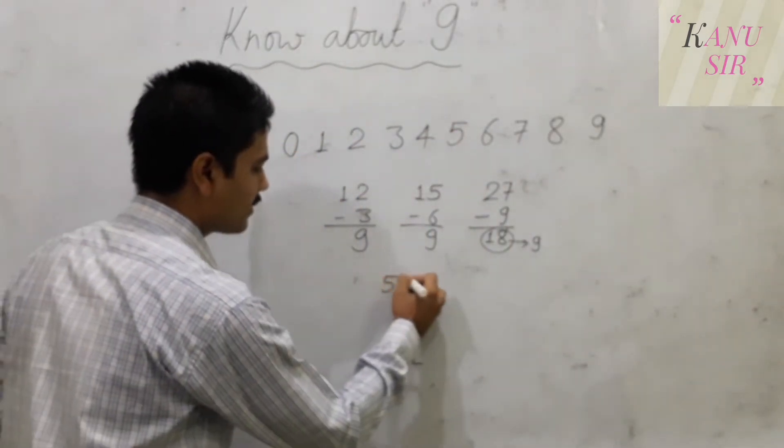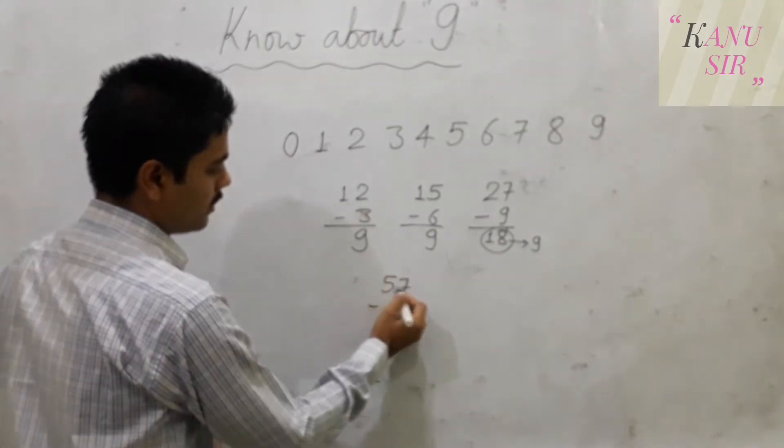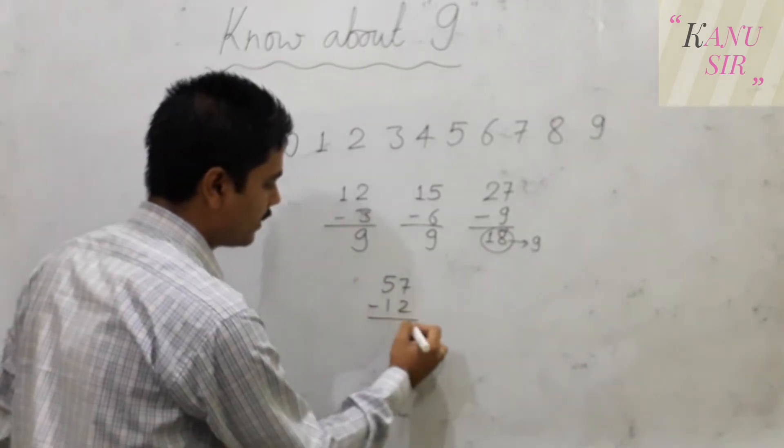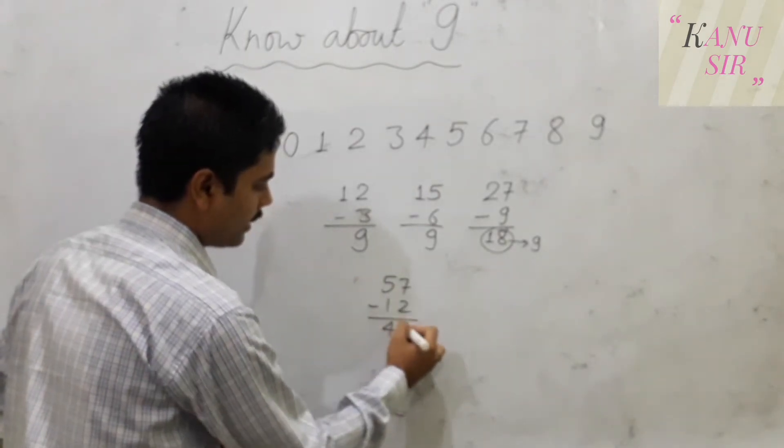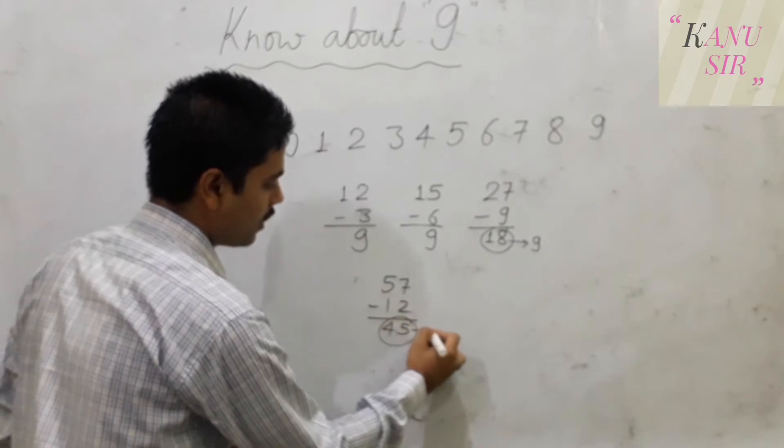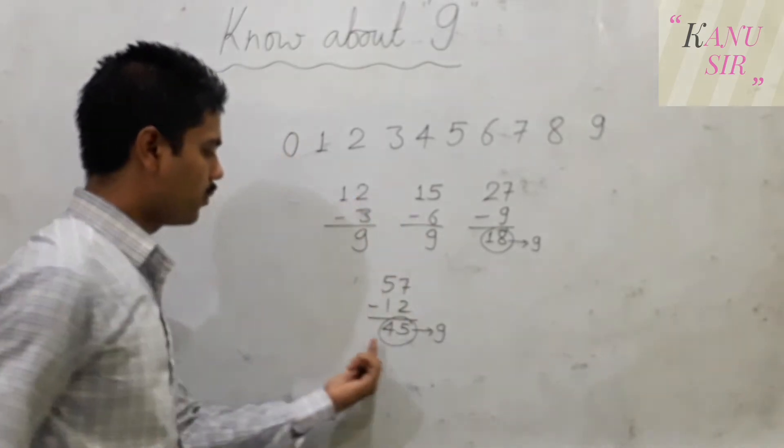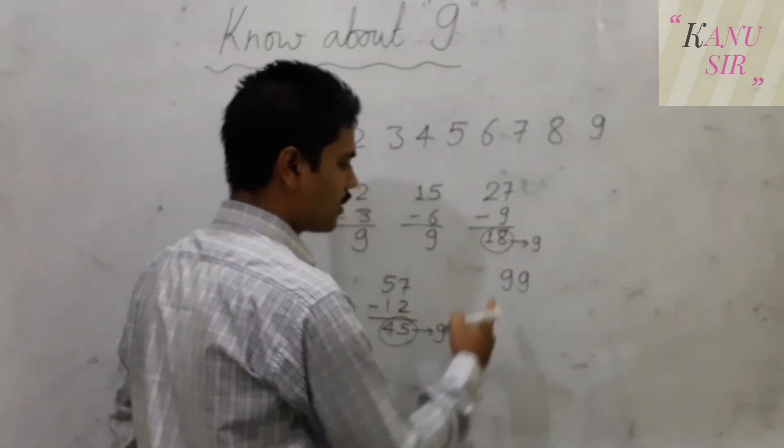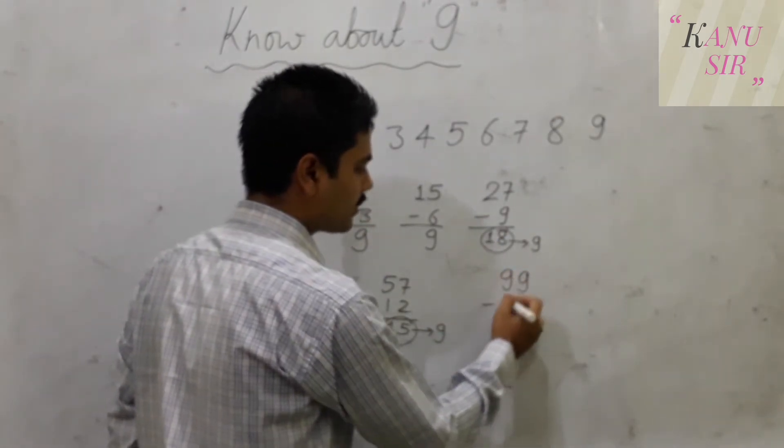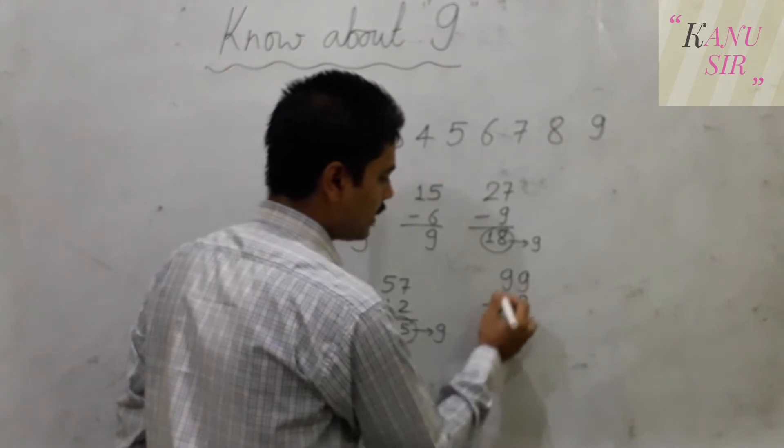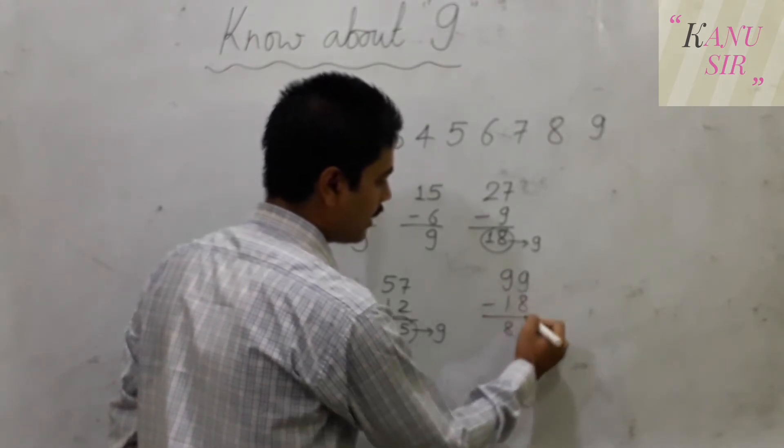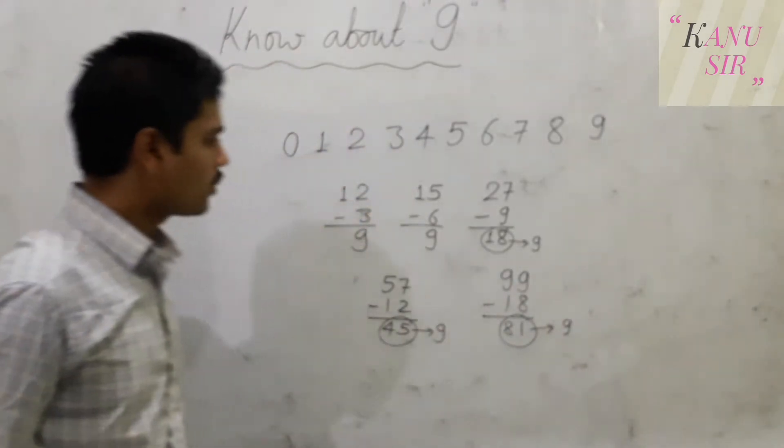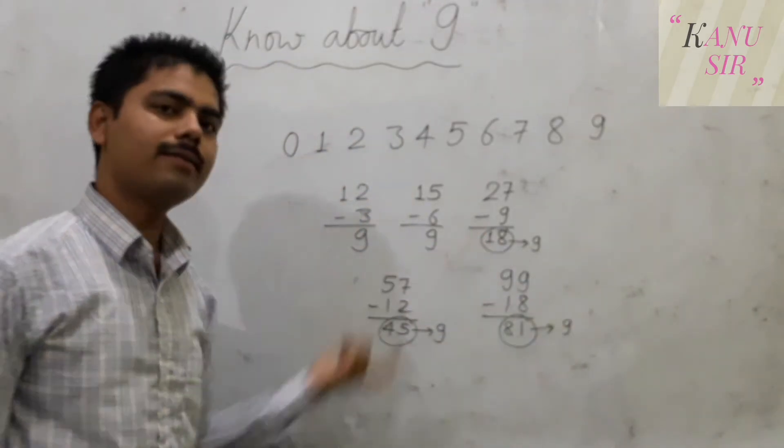Another is 57 minus 12. 5 plus 7 gives you 12. 57 minus 12 you will get 45. 45 will sum to 9. 4 plus 5 is 9. So let us write 99. Then you will get 9 plus 9 is 18. Then what will you get here? 81. It will also sum to 9. So everywhere there is 9.